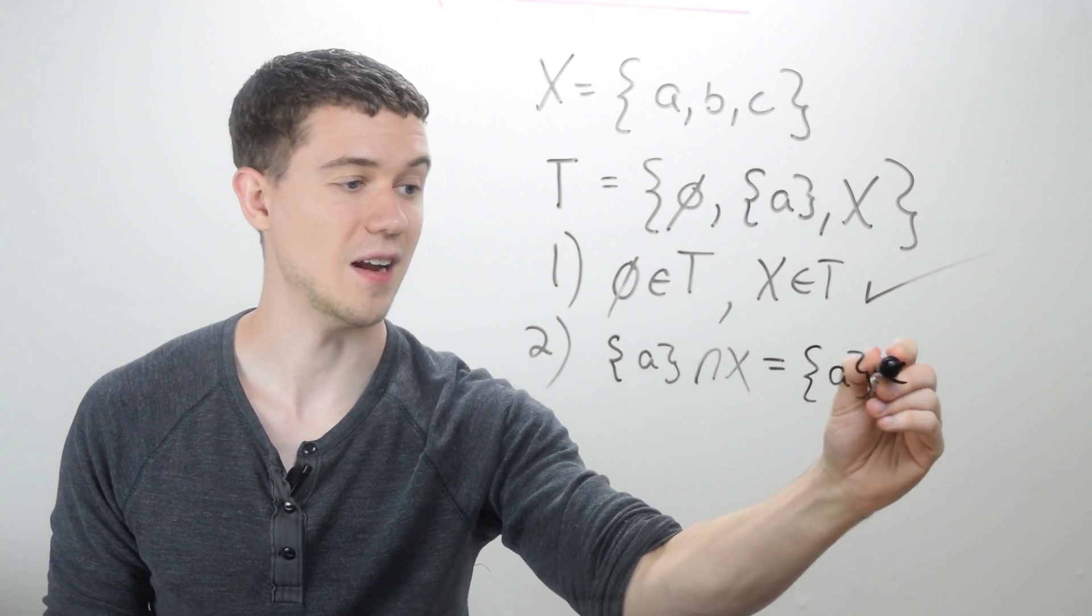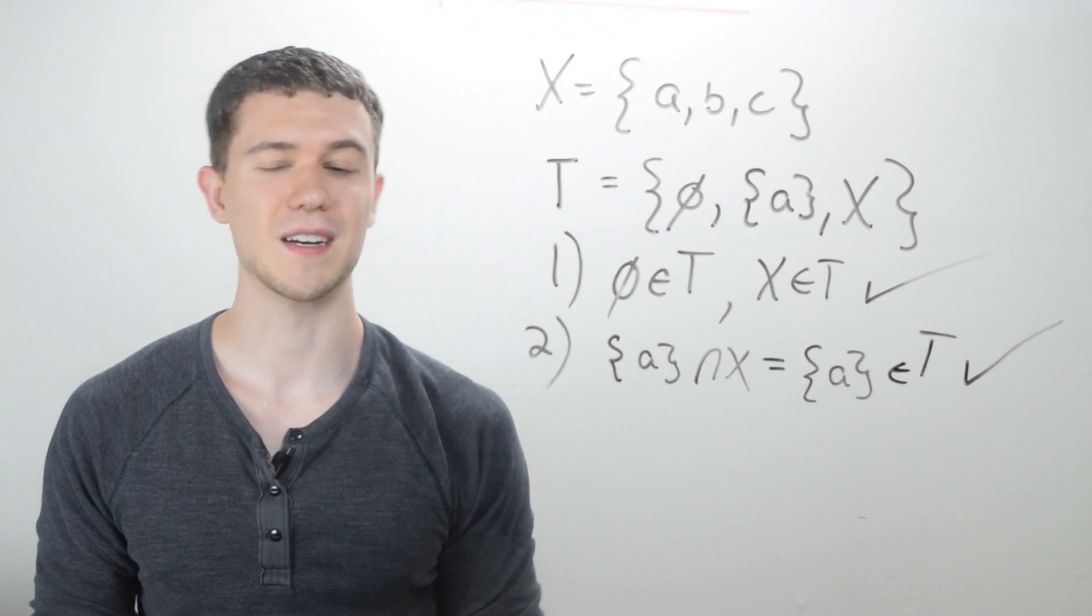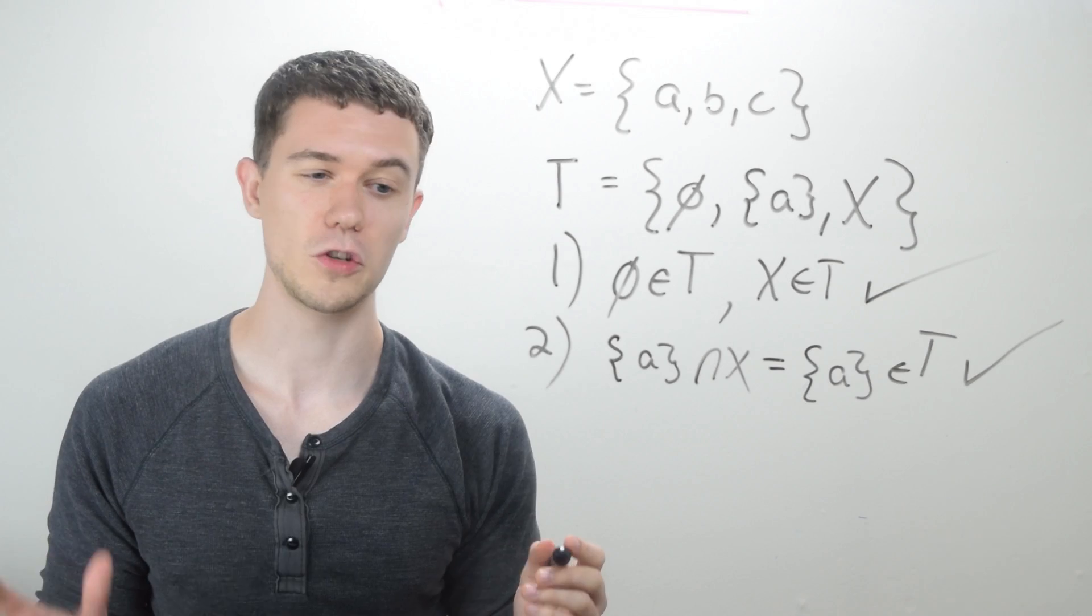Well, A is an element of X. So the intersection of A and X is just A. Well, A is an element of our topology. So we can see here that no matter which way I intersect any two elements, they're an element in the set. So we've passed the second criterion for a topology.